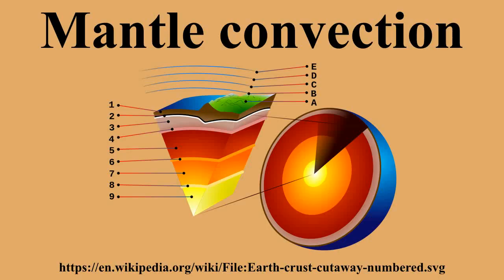At the consumption edges of the plate, the material has thermally contracted to become dense, and it sinks under its own weight in the process of subduction, usually at an ocean trench. This subducted material sinks through the Earth's interior. Some subducted material appears to reach the lower mantle, while in other regions this material is impeded from sinking further, possibly due to a phase transition from spinel to silicate perovskite and magnesio-wüstite, an endothermic reaction.